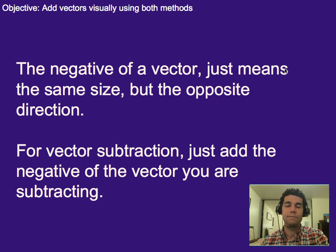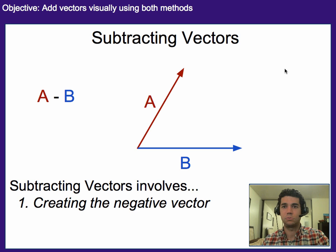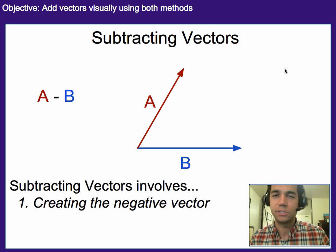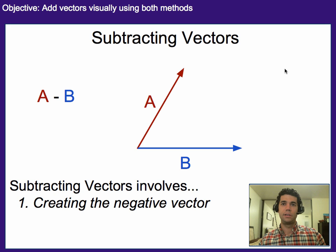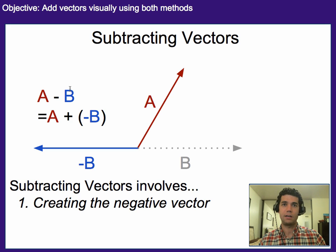Lastly, the negative of a vector just means the same size but opposite direction. So if we're subtracting vectors, what we do is we just add the negative of the previous vector. For subtraction, just add the negative of what you were going to be subtracting. So if we had A minus B, the first thing we're going to do is create the negative vector. In this case, B is being subtracted, so that's like adding the negative of B. The negative of a vector is just the same vector in the opposite direction. So this equals A plus negative B, and we're actually going to be adding A plus this one right here.